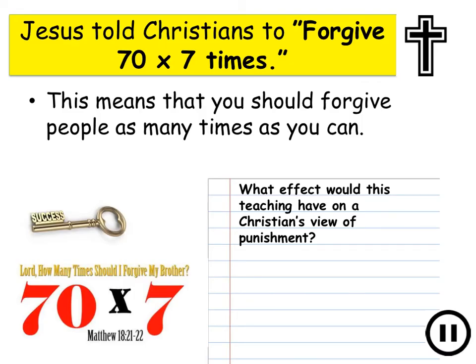The next of our key rules is a Christian key rule that Jesus used: forgive seventy times seven times. This means that you should forgive people as many times as you can. What effect would this have on a Christian's view of punishment?